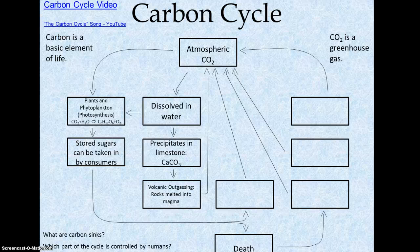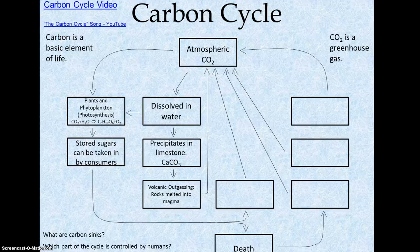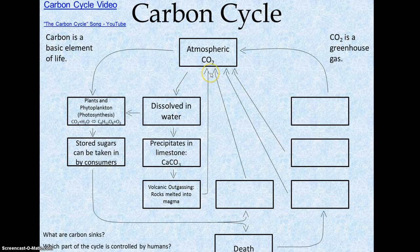Because limestone is part of a rock, you have to consider that the rock cycle — which is a very long cycle — happens. Volcanoes take that melted magma and outgas CO2. Some of that carbon comes out of the rock material, the magma, and goes out into the atmosphere. So volcanoes are a source of atmospheric carbon dioxide coming out from the rocks.